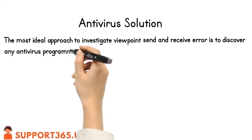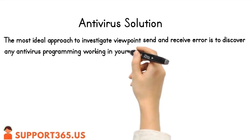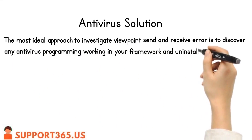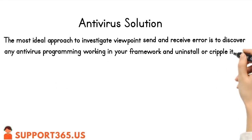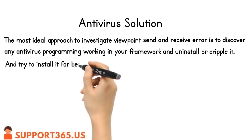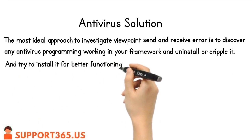Antivirus Solution: The most ideal approach to investigate Outlook send and receive error is to discover any antivirus software working in your system and uninstall or disable it, then try to reinstall it for better functioning.